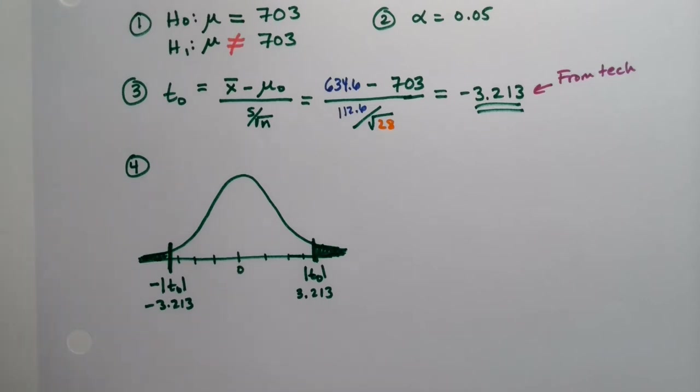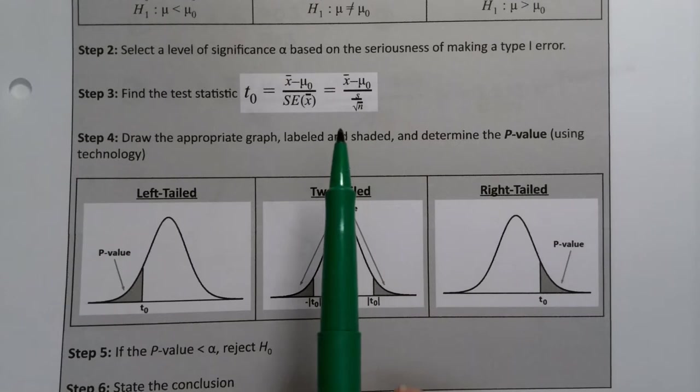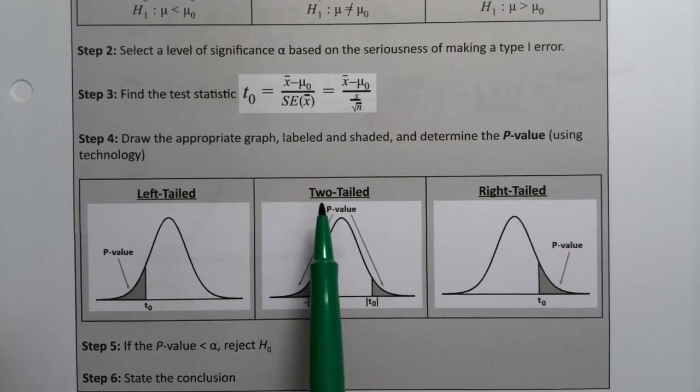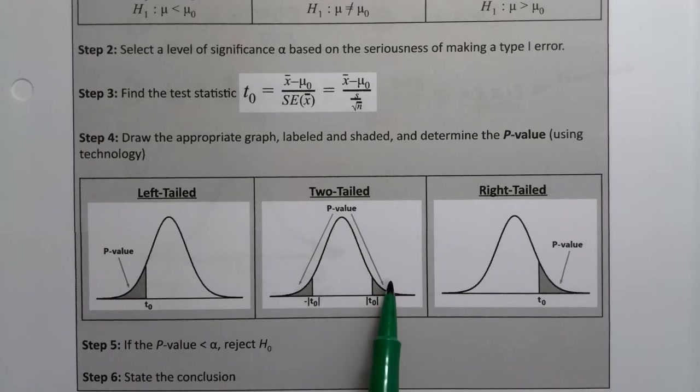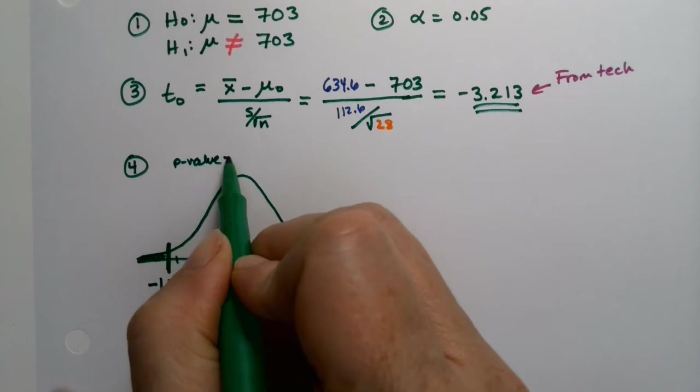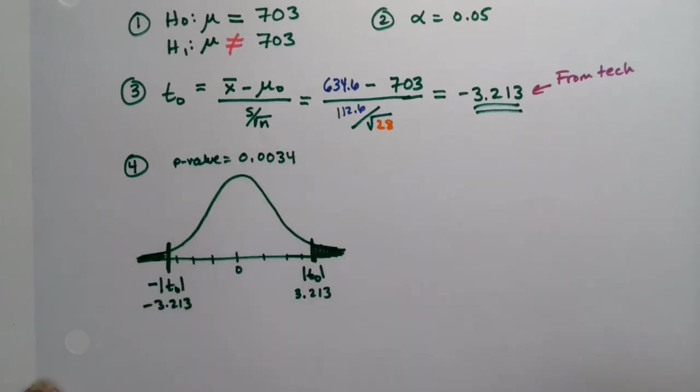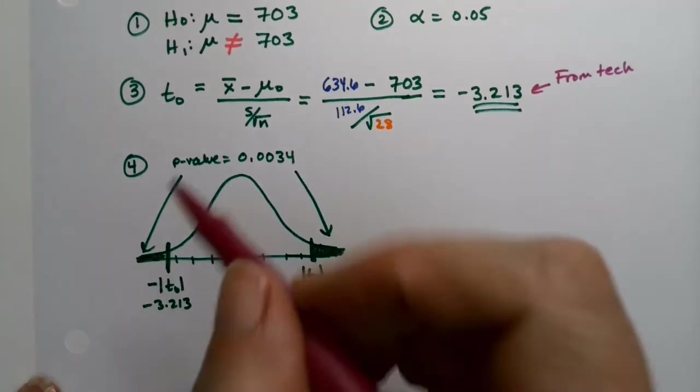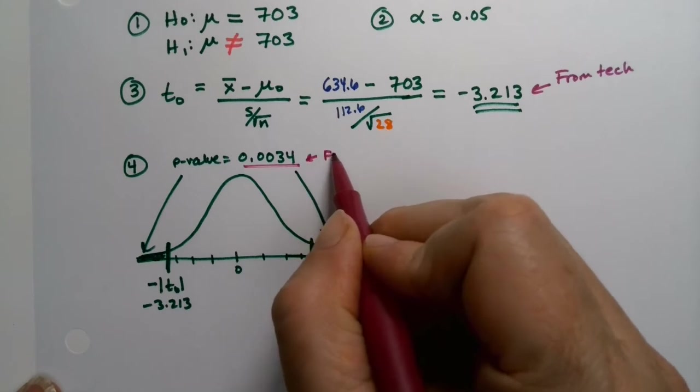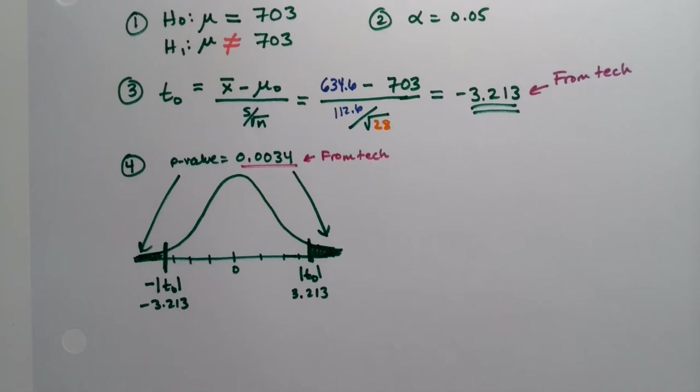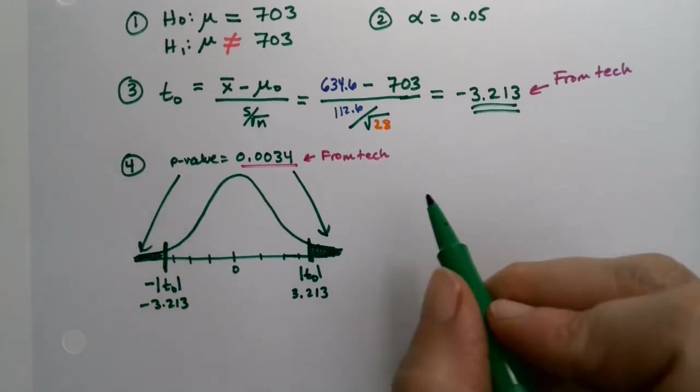You are following the script that this lovely table gives you. So it's telling you do negative absolute value T0, positive absolute value T0. So draw them in. Now your P value, you see it's a two-tailed test, so it gets that double-sided arrow. So we're going to go up here and we're going to say P value. And the P value was 0.0034. It came out of technology. So it doesn't come by magic. You find it from technology. Either from the calculator or from StatCrunch, whichever one you want to use.